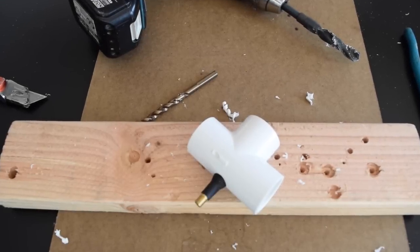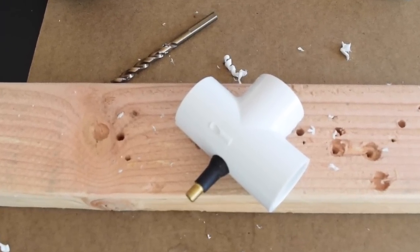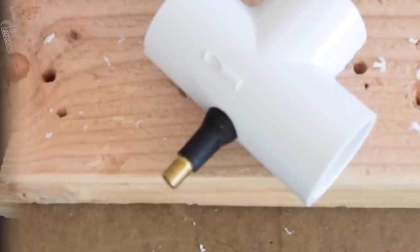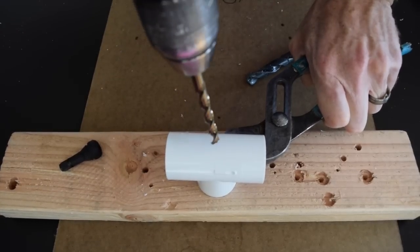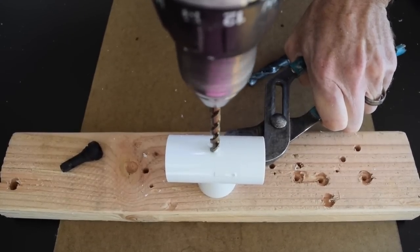A tubeless tire valve is used to charge the system with compressed air from a bicycle pump. I used a .453 inch rim hole tire valve that I purchased at an auto parts store. This fit nicely inside a 9-16 inch hole drilled into the PVC fitting.